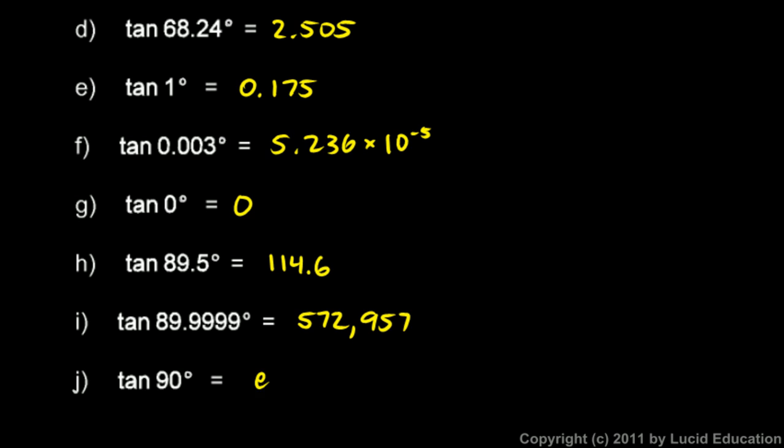Or if you want to, right here, you could write the tangent of 90 degrees is undefined. And the reason is because the tangent is the opposite divided by the adjacent. And at 90 degrees, the adjacent is 0. So you can't divide by 0.